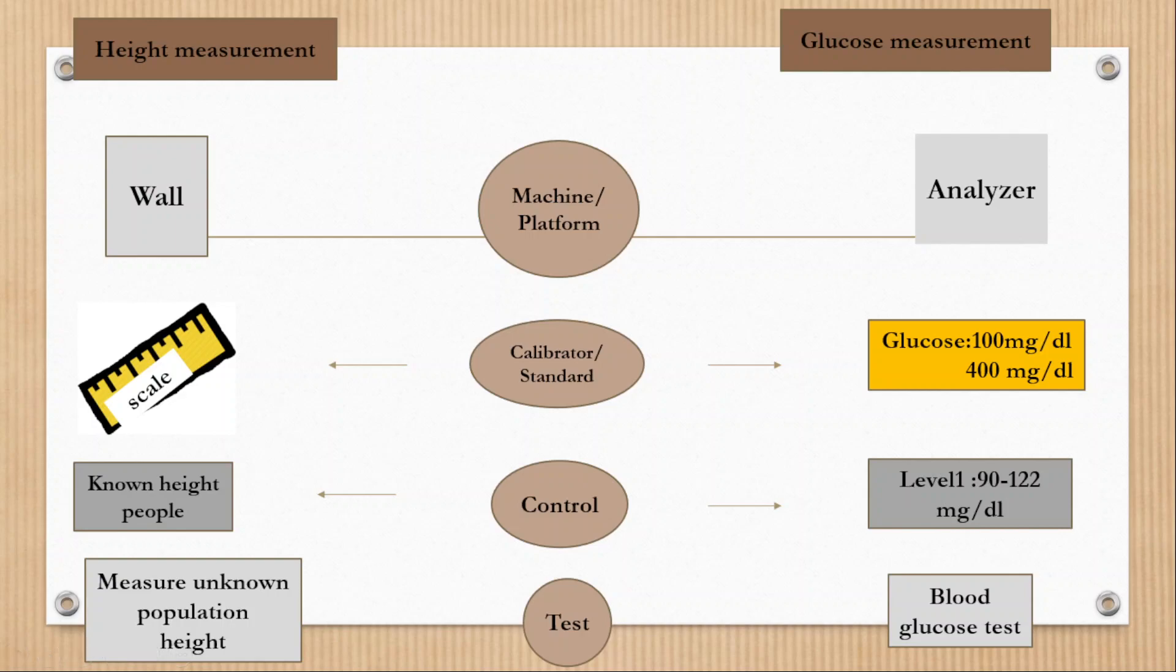Here we have level one glucose control having value 90 to 122 mg per dl. And if we run this control in analyzer, the method should give report within range, so that we can assure that test method is well calibrated. After control, finally go for the test.